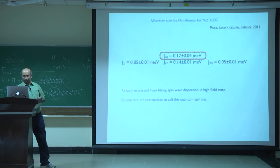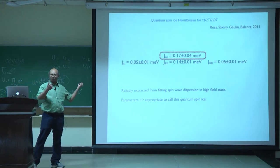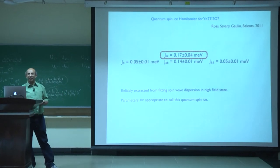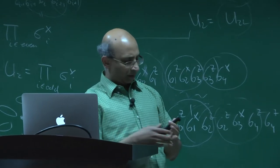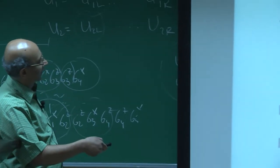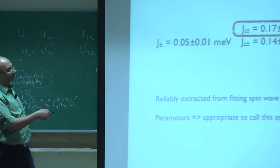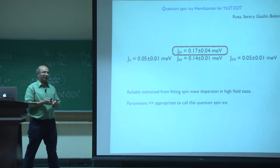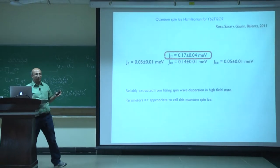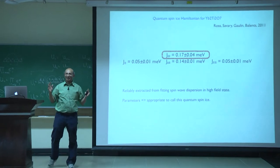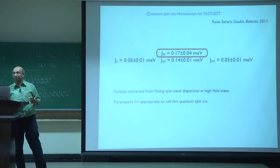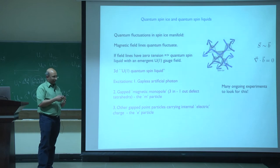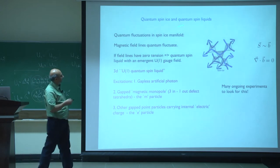Given this situation in experiments, what can we do theoretically? The Hamiltonian is so complicated that it's beyond any reliable analytical or numerical methods. What I want to do is use this state of affairs to motivate general theoretical questions about this kind of phase. The crucial questions are: what are the distinct kinds of U1 quantum spin liquids at a given symmetry? And how do we distinguish them in experiments? We are aided — or perhaps hindered — by the fact that this Hamiltonian has very little physical symmetry: the only physical symmetry is time reversal times some space group.